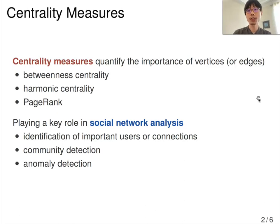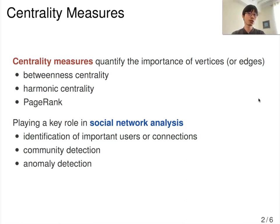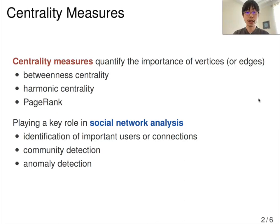Centrality measures in network analysis quantify the importance of vertices or edges. For example, there is betweenness centrality, harmonic centrality, and PageRank. Such measures play a key role, especially in social network analysis, like the identification of important users or connections, community detection, and anomaly detection.